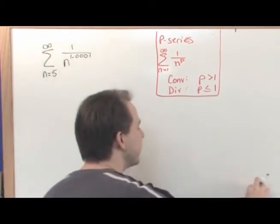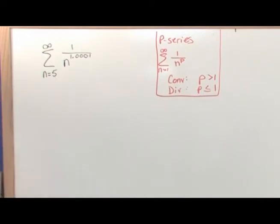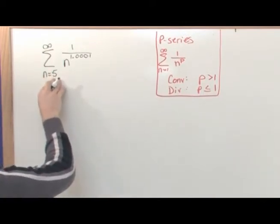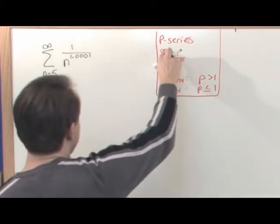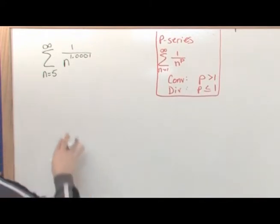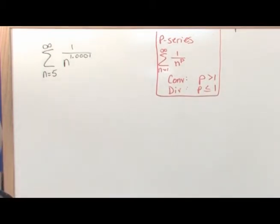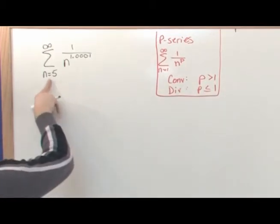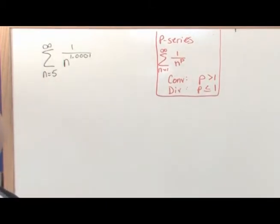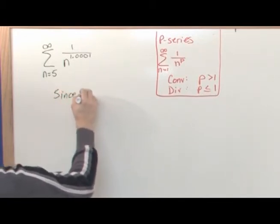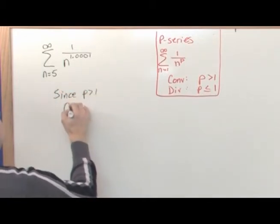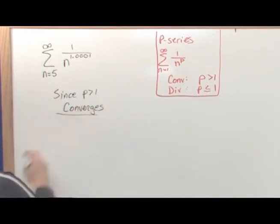It's going to depend on how the thing behaves as you go off to infinity. So to boil it all down: yes, be cognizant when the series starts somewhere other than n equals one when comparing to the p-series. And yes, it would impact the actual sum if it started at one versus five. But when talking about convergence, starting at one, two, or five doesn't really matter. It's the behavior as you approach infinity that dominates. Since p is greater than one and this is a p-series, the series converges.